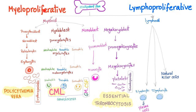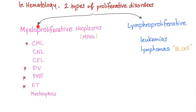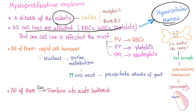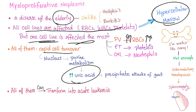Here's the famous slide. Myeloproliferative disorders are here. Polycythemia vera is here, when you have lots of red blood cells. In hematology, we have two types of proliferative disorders: myeloproliferative or lymphoproliferative. Myeloproliferatives include polycythemia vera. Myeloproliferative neoplasms are a disease of the elderly. There is hypercellular bone marrow because all cell lines are increased, but one cell line is dominant — super increased. In polycythemia vera, red blood cells are super high in number. Rapid cell turnover leads to hyperuricemia, and they can transform into acute leukemia.